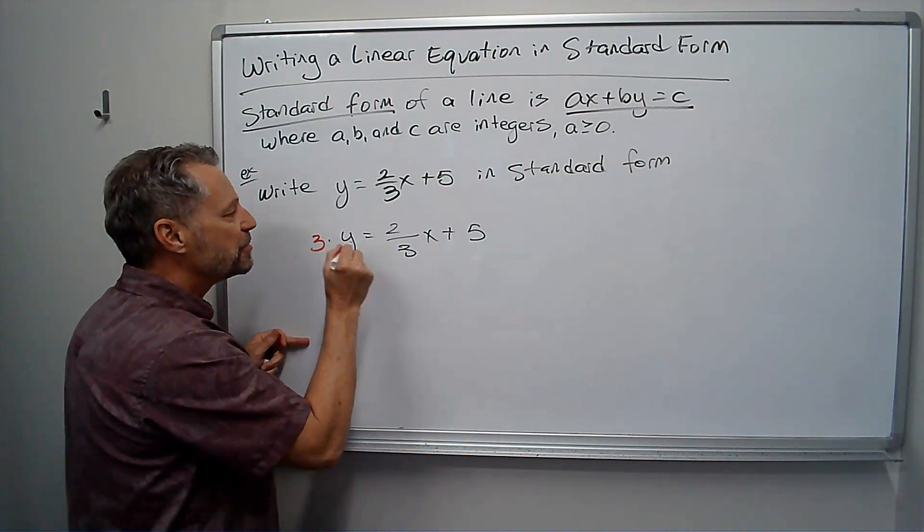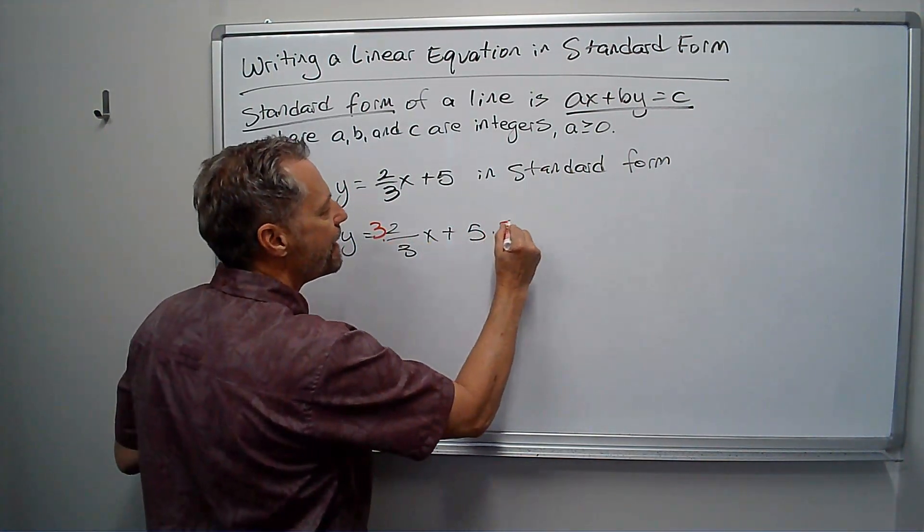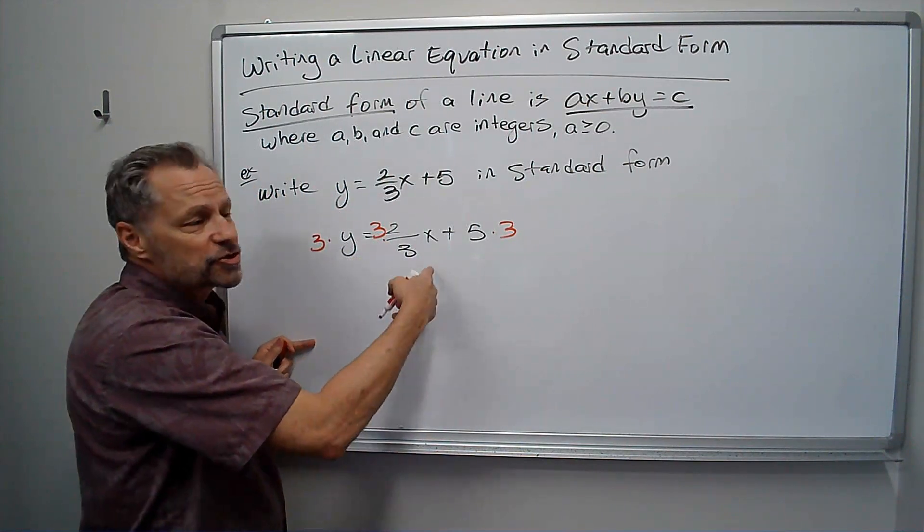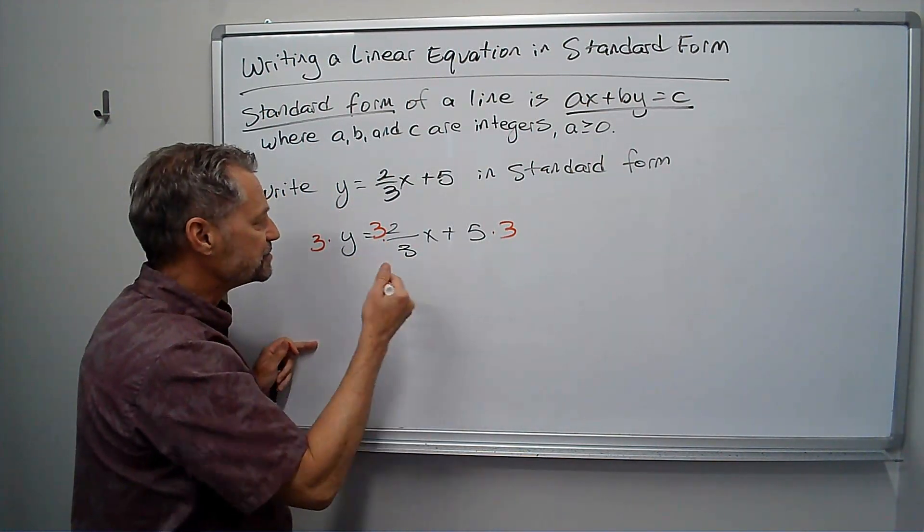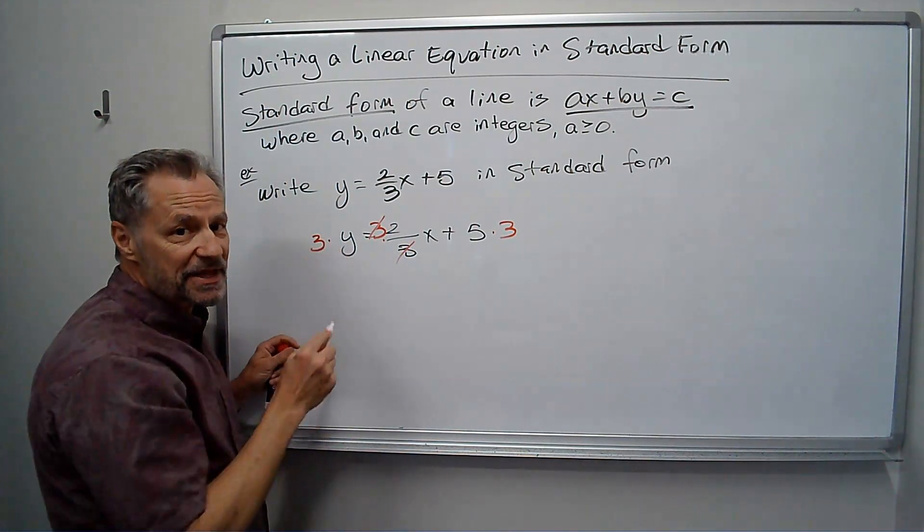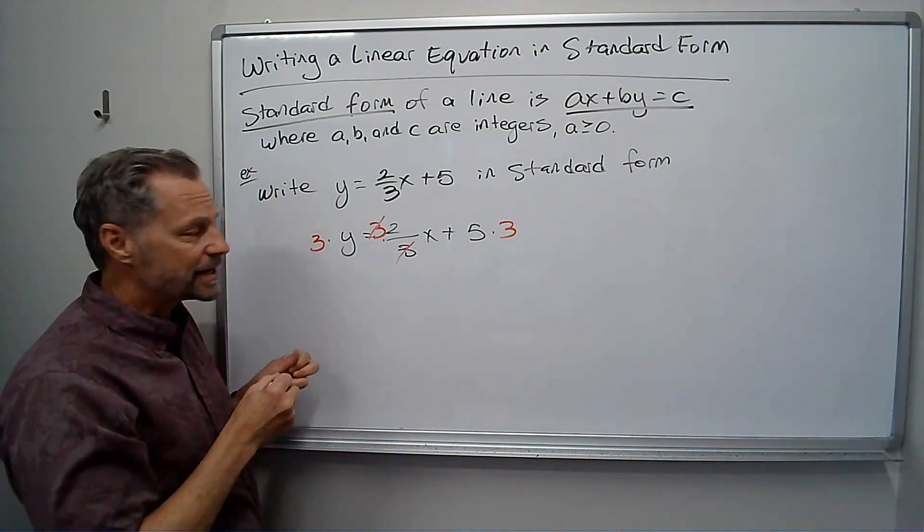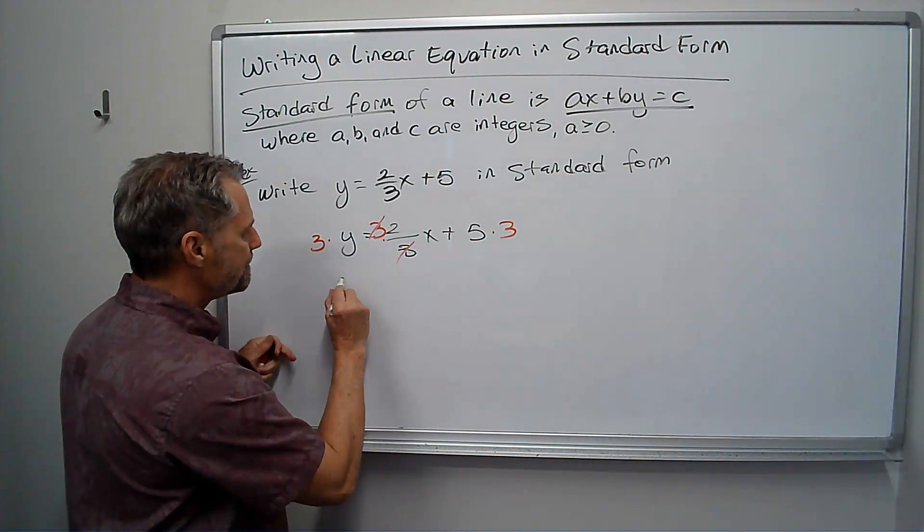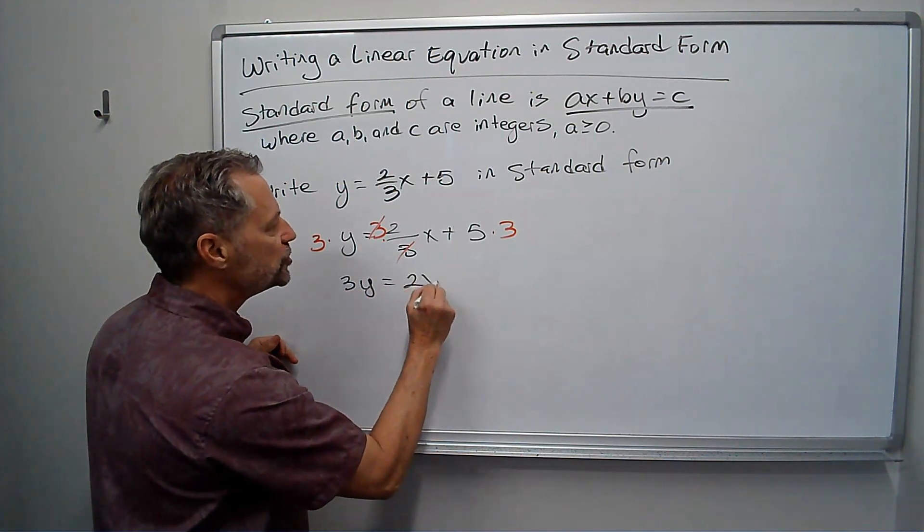Well, I need to multiply both sides by three, and notice I have to distribute, so each term gets times three. These threes cancel out, but that's all that cancels out. So now what I have is three Y equals two X plus 15.